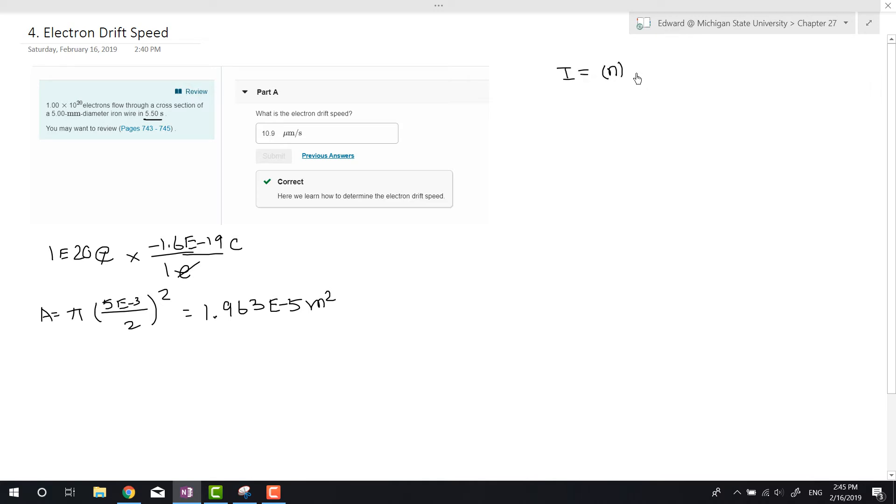Let's write down what equations we know. We know I equals the electron density times the charge of an electron, times the electron drift velocity (which is what we're trying to find), times the area. Let's rearrange this, so vd is going to be I divided by n*e*A.